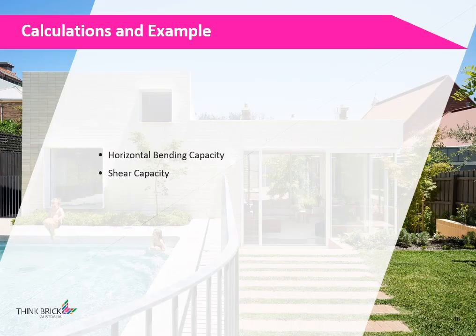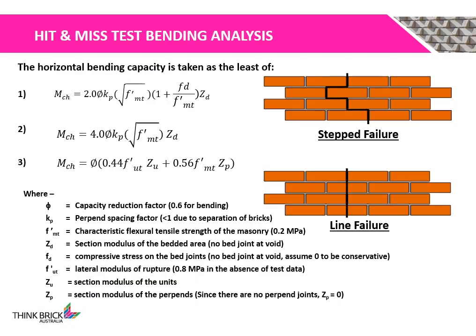In the next few slides, we'll go through an example covering the calculation of horizontal bending capacity and shear capacity of Hidden Mist Walls. There are two failure types: step failure and line failure. Equations 1 and 2 represent step failure, while Equation 3 represents line failure.